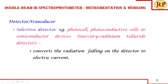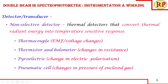There are two types of detectors. Selective detectors, similar to those used in UV spectrophotometry and colorimetric analysis — such as photocells, photoconductive cells, or semiconductor devices — convert the radiation falling on them into electric current proportional to the intensity of the transmitted light. Non-selective detectors, commonly called thermal detectors, convert thermal radiant energy into a temperature-sensitive response. Depending on the detector type: a thermocouple changes in EMF or voltage; a thermistor or bolometer changes in resistance; a pyroelectric detector changes in electric polarization; and a pneumatic cell changes in pressure of the enclosed gas.